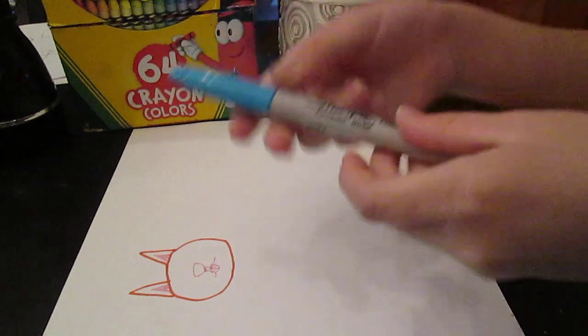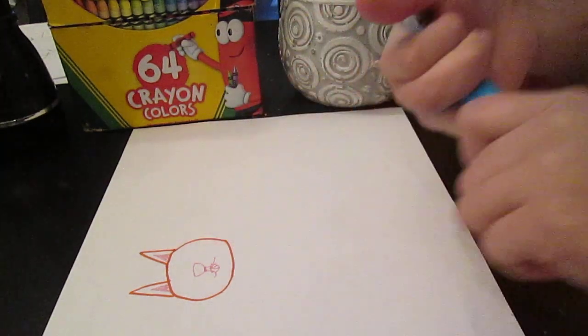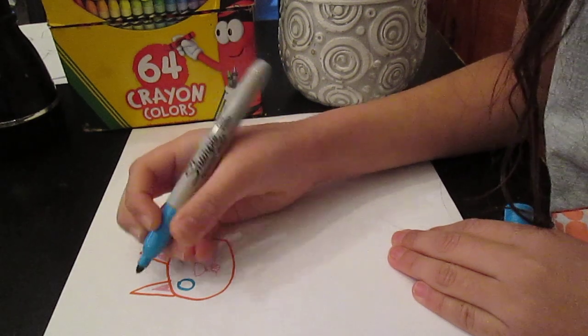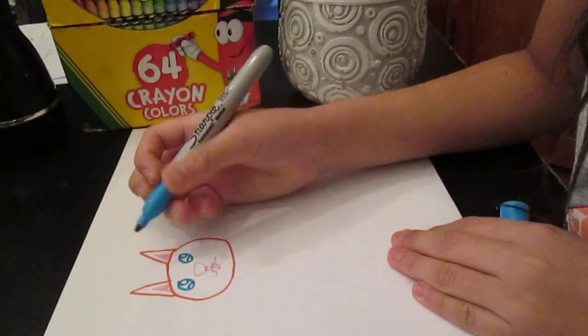Now you're going to use a blue Sharpie. You're going to draw the eyes. You see how it looks like that, but then it looks like this.